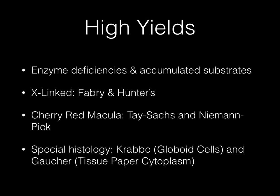In conclusion, the high-yield points: know the enzyme deficiencies and accumulated substrates for each disease. Know which are X-linked — Fabry and Hunter's. Know which have a cherry red macula — Tay-Sachs and Niemann-Pick. Know the special histology for Krabbe's disease (globoid cells) and Gaucher's disease (tissue paper cytoplasm). Metachromatic leukodystrophy is not on this list — study that one on your own, as it's low yield.